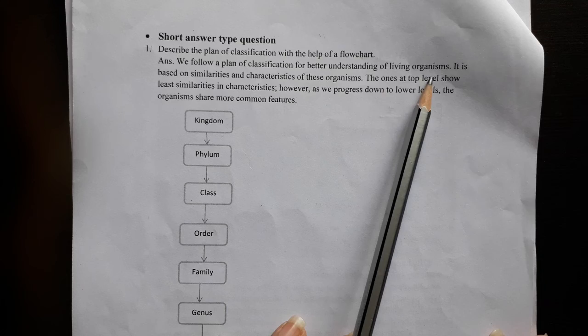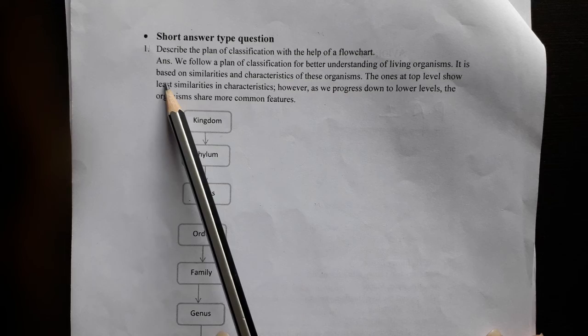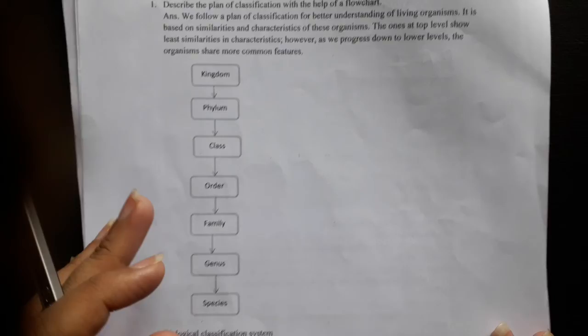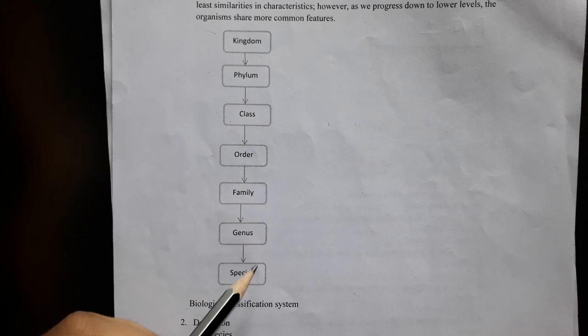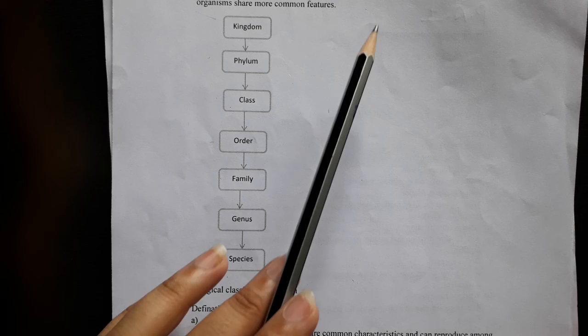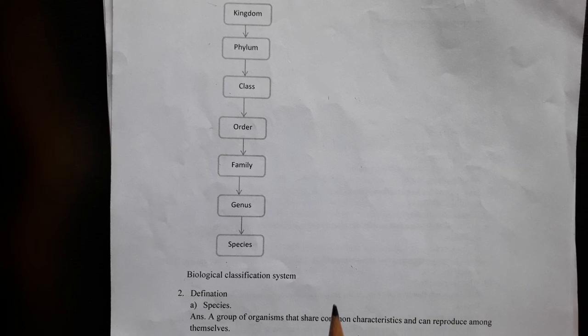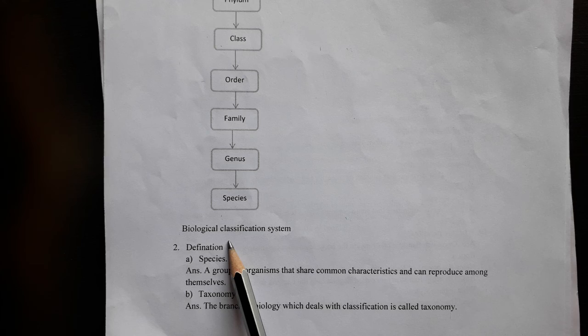We divide organisms according to their characteristics and similarities into: Kingdom, Phylum, Class, Order, Family, Genus, and Species. At the top level, organisms show the least similarities; however, as we progress down to lower levels, organisms share more common features. This is the biological classification system.